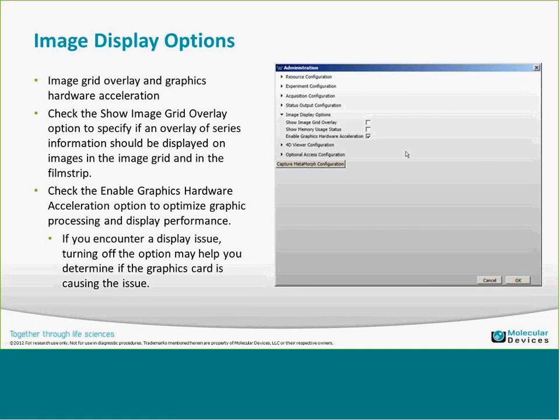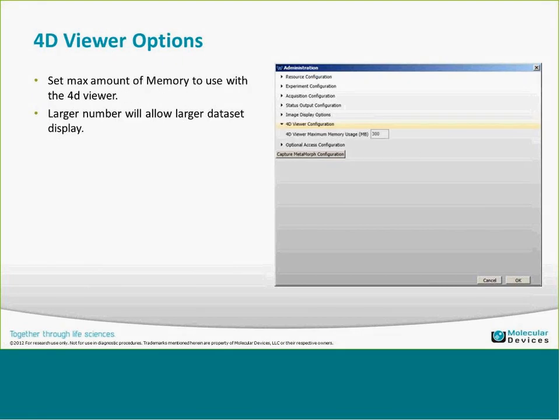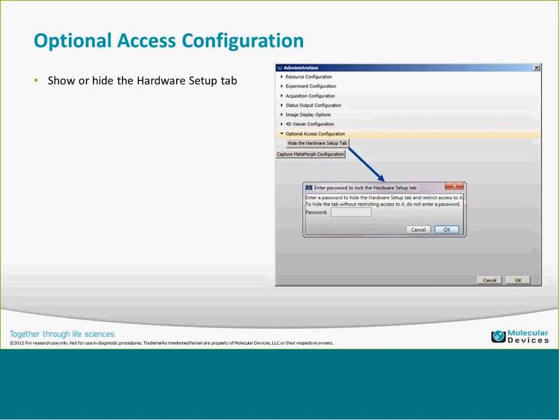The 4D viewer option is where you set the maximum memory usage — the default is 300 megabytes. I'd recommend changing this to at least 2 gigabytes or more, depending on how much RAM you have available, because you want a larger value when looking at larger datasets in the 4D viewer.